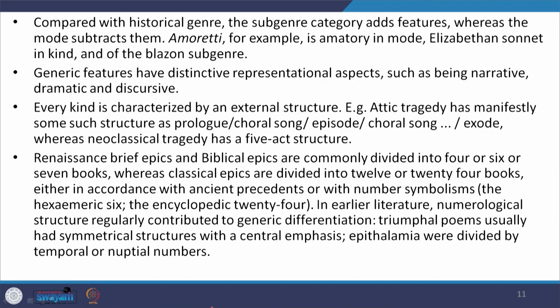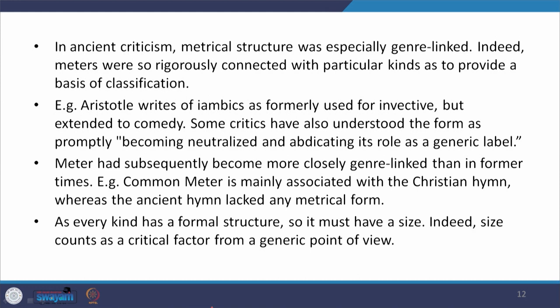The hexameric six and the encyclopedic twenty-four are examples of numerological structure. In earlier literature, numerological structure regularly contributed to generic differentiation. Based on how many books a work has, how many cantos an epic has would account for the generic differentiation — the genre it belongs to. Triumphal poems usually had symmetrical structures with a central emphasis. Epithermia were divided by temporal or nuptial numbers. In ancient criticism, metrical structure was especially genre-linked; meters were so rigorously connected with particular kinds as to provide a basis of classification.